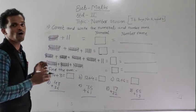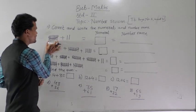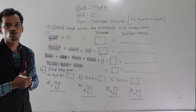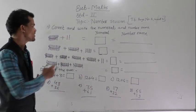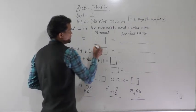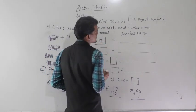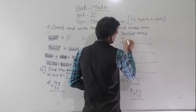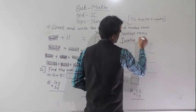So the total pencils are 10 plus 2 equals 12. Write the number 12 in the box and write the spelling: T-W-E-L-V-E.